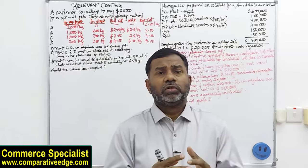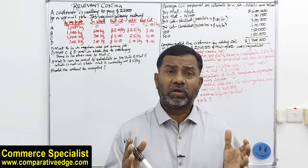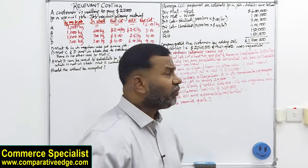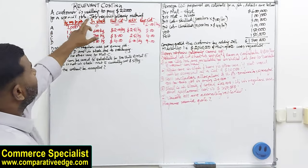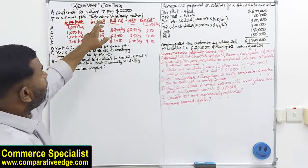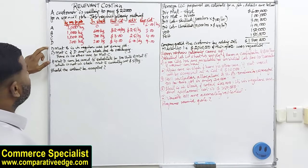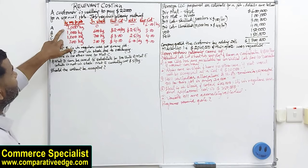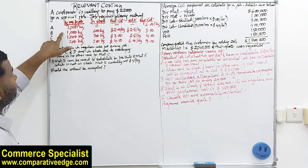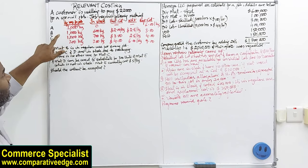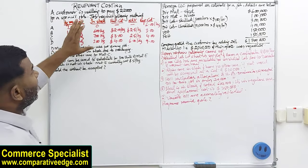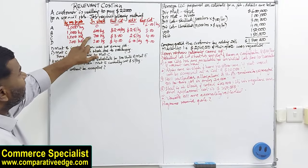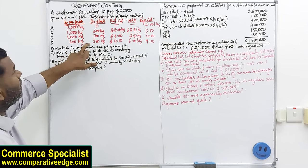Now I have two questions in which I'll discuss the various aspects of relevant cost, especially relating to material, labor, and overheads. In the first question, a customer is willing to pay twenty-two thousand US dollars for a special job. The job requires materials A, B, C, and D. Material A requires one thousand kilograms, material B one thousand kilograms, material C one thousand kilograms, and material D two hundred kilograms. In stock, we have nothing for material A, six hundred kilograms of B, seven hundred of C, and two hundred of D.